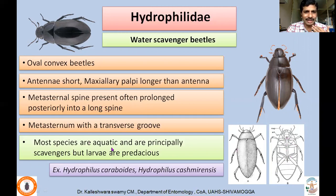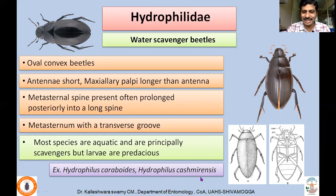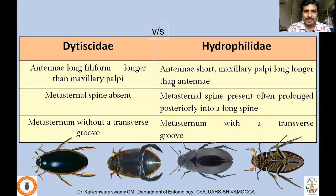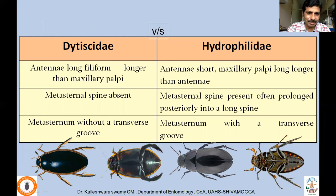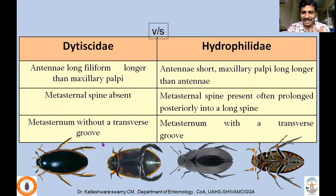Hydrophilids are aquatic and principally scavengers, whereas Dytiscidae are predaceous. Common species include Hydrophilus carboidus and Hydrophilus cashmereensis. Summary of differences: in Dytiscidae antennae are longer than maxillary palpi, metasternal spine is absent; in Hydrophilidae antennae are short, maxillary palpi longer than antennae, and metasternal spine is present fitting into a groove.